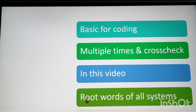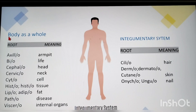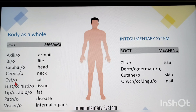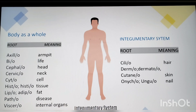In this video we will see different root words for all systems. First, body as a whole: axillo — armpit; bio — life (biotechnology means technology of life); cephalo — head; cervico — neck; cyto — cell; histo — tissue (histology means study of tissues); lipo/adipo — fat (adipose tissue means tissue of fat); patho — disease (pathology means study of diseases); viscero — internal organs (visceral means related to internal organs, like kidney, heart, and lungs).